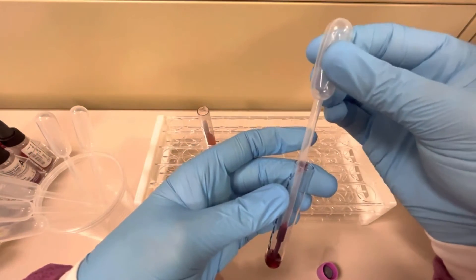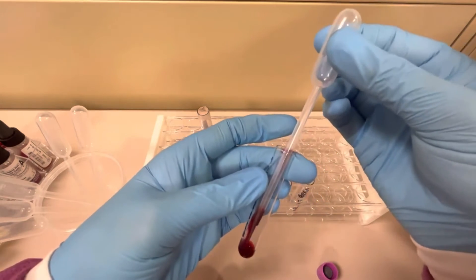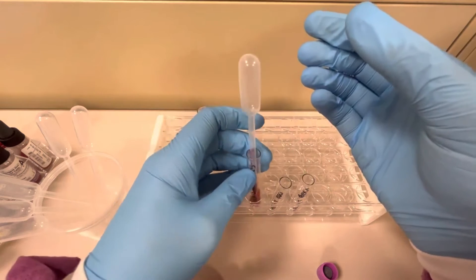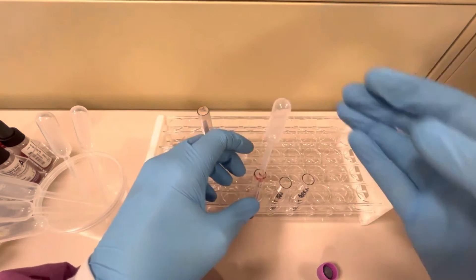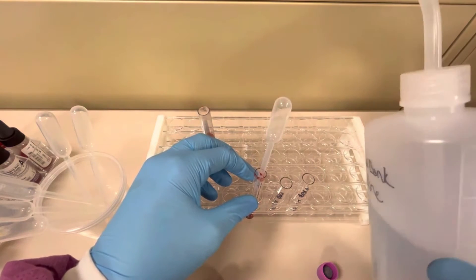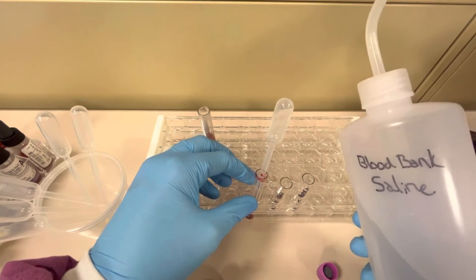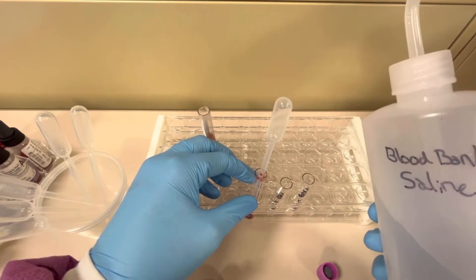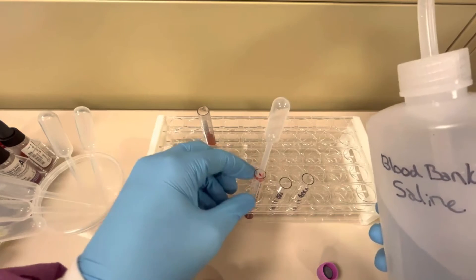If we were just to use straight red blood cells in our reactions, it's going to give us way too heavy of a reaction. It's not going to be working properly. So what I want to do now to make this suspension is I'm going to take this blood bank saline. We cannot use water. It has to be specific blood bank saline.